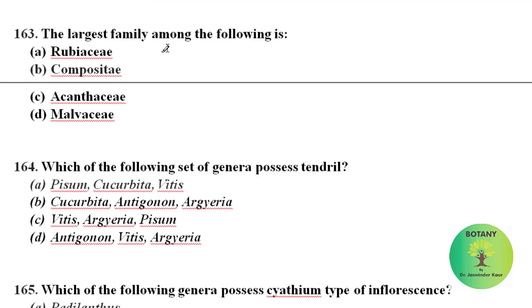The largest family among the following — meaning the family having the largest number of species — is family Compositae, also known as Asteraceae.